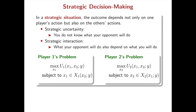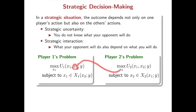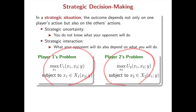Furthermore, what your opponent will play also depends on what you are going to play, which again depends on your opponent's action. That is about strategic interactions. In a mathematical form, you can choose x1 only. But both x1 and x2, where x2 is chosen by your opponent, determine your outcome. So we need to solve two optimization problems simultaneously.